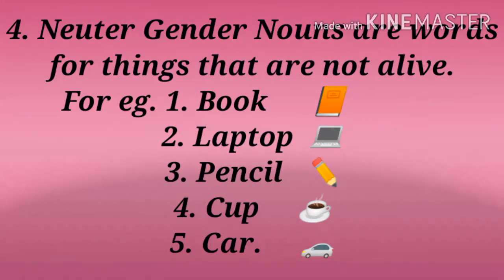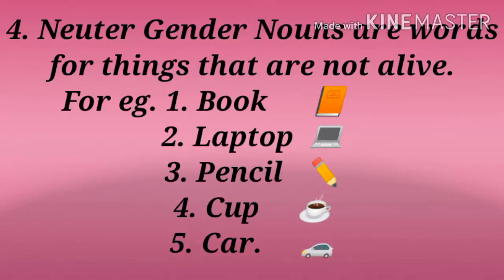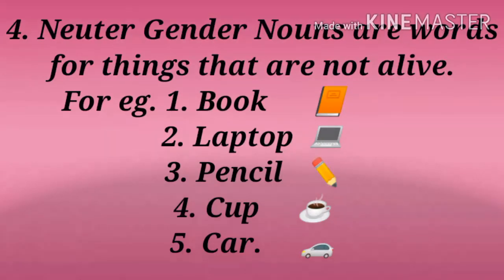Number four: neuter gender. Neuter gender nouns are words for things that are not alive — non-living things like book, laptop, pencil, cup, and car. For non-living things we use neuter gender.